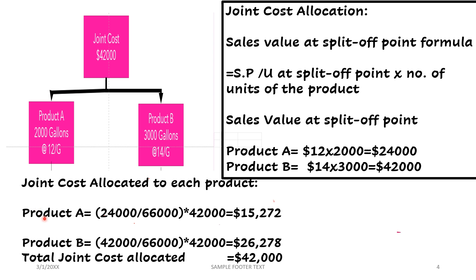The cost allocated to product A equals its sales value of 24,000 divided by the total sales value of 66,000, multiplied by the joint cost of 42,000. Some students find the percentage first — 24,000 divided by 66,000 times 100 — which is also fine. This gives product A an allocation of 15,272. For product B, allocating 42,000 divided by 66,000 times 42,000 gives 26,728, so the total allocated cost equals 42,000.